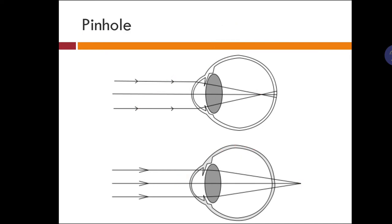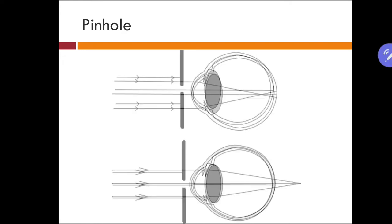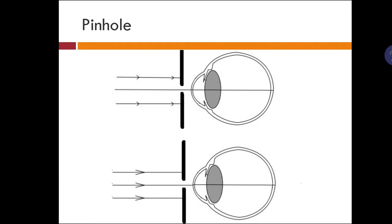So how does a pinhole work here? When we place a pinhole in front of this eye having a refractive error, the pinhole will block the rays that are not focusing on the retina and will allow only one ray of light which is going straight onto the retina. This will clear the vision of the patient.